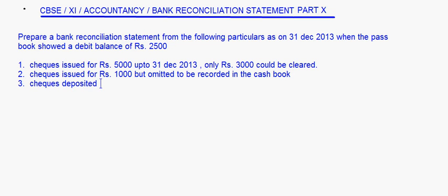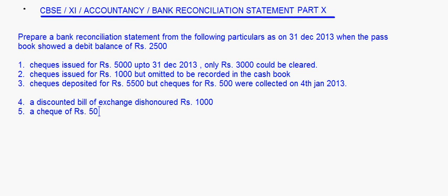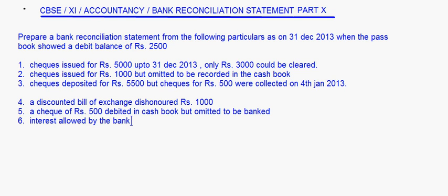Thirdly, checks deposited for Rs. 5,500 but checks for Rs. 500 were collected on 4th January 2013. Then, a discounted bill of exchange dishonored Rs. 1,000. A check of Rs. 500 debited in cashbook but omitted to be banked. Then interest allowed by the bank Rs. 200, but no entry was passed in the cashbook.